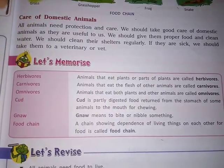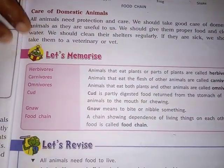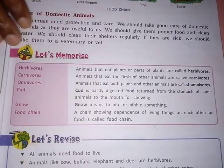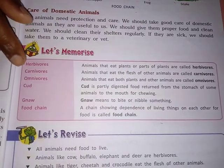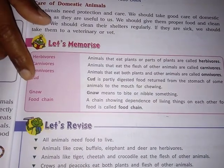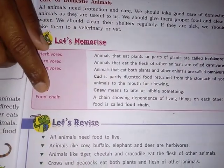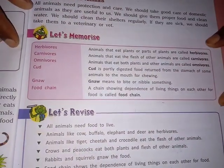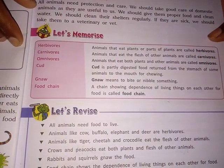Today, your homework. In page number A5, this is your homework. You have to write in your notebook. Page number A5 is 'Let's Memorize.' There are some terms: Herbivorous, Carnivorous, Omnivorous, Curd, Gnaw, and Food Chain. This is your homework.